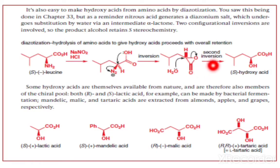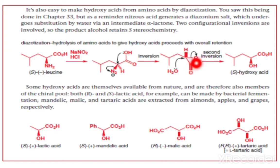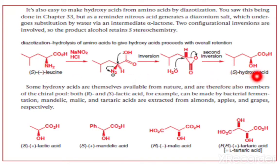In the second step, attack of a water molecule occurs, again opposite — so there is a first inversion and then a second inversion: two inversions in total. Therefore, finally, we get the retention of configuration product, which is S-hydroxy acid. Two configurational inversions are involved, so the product alcohol retains the S-stereochemistry — there is retention of configuration. The starting material has the NH2 group on the front side; after completion of this reaction, the hydroxyl group is again on the front side, confirming retention of configuration.